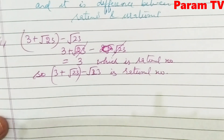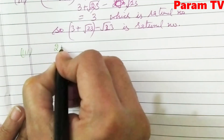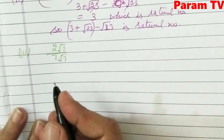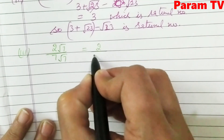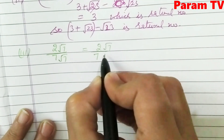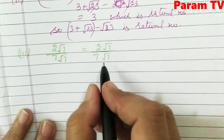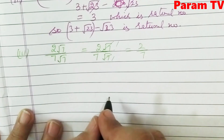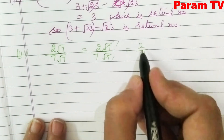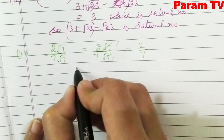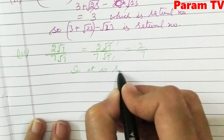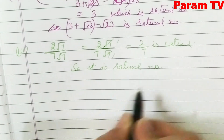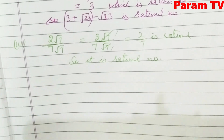Third part is 2 root 7 over 7 root 7. Let's solve: this gives 2/7 times (root 7 / root 7). The root 7 in numerator and denominator cancel. What is left is 2/7, which is in P/Q form — so it is a rational number.